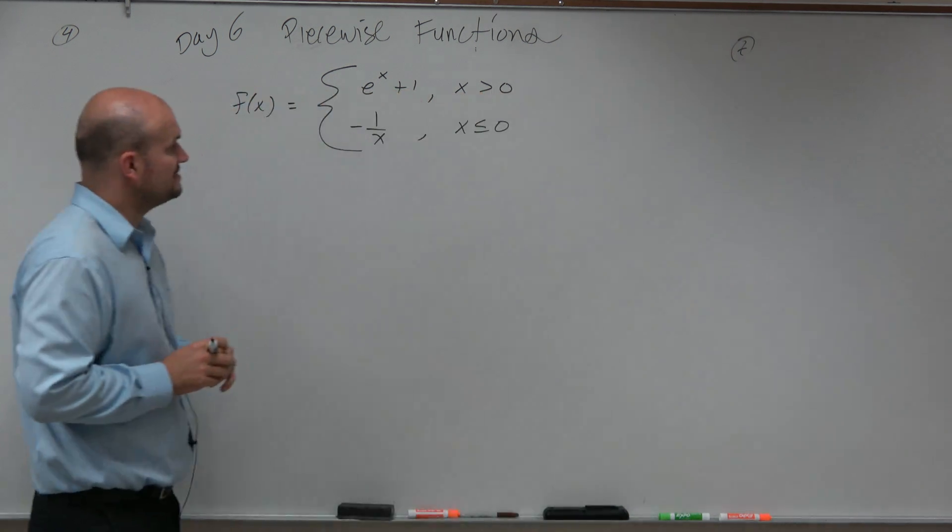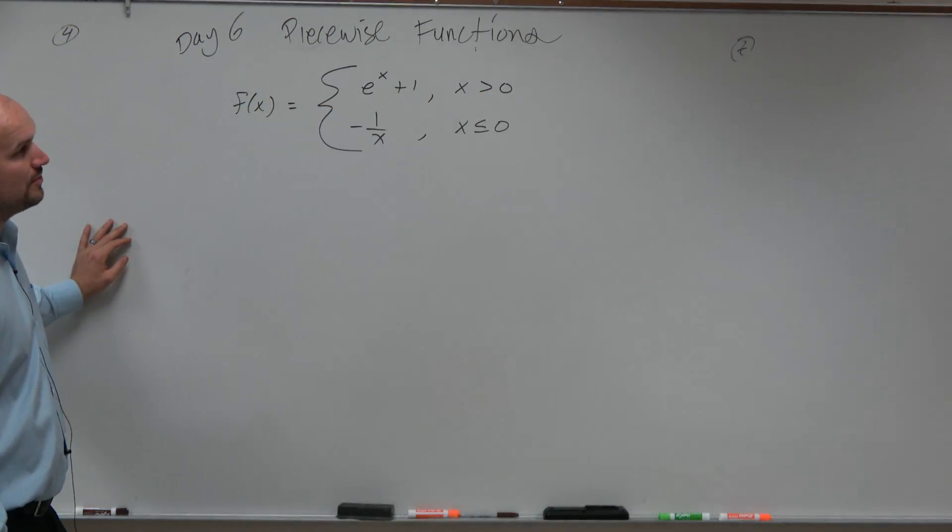So in this example, guys, we have f(x) equals square root of e to the x plus 1, where x is greater than or equal to 0, and negative 1 over x when x is less than or equal to 0.